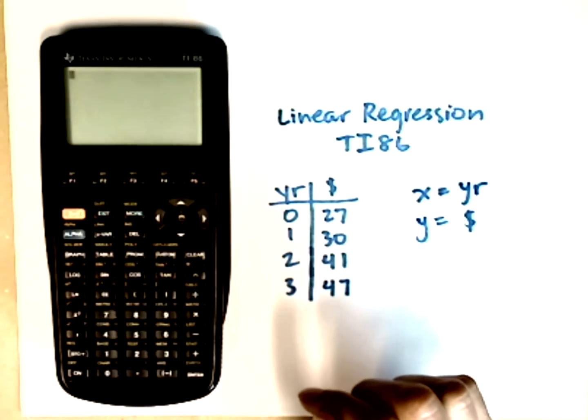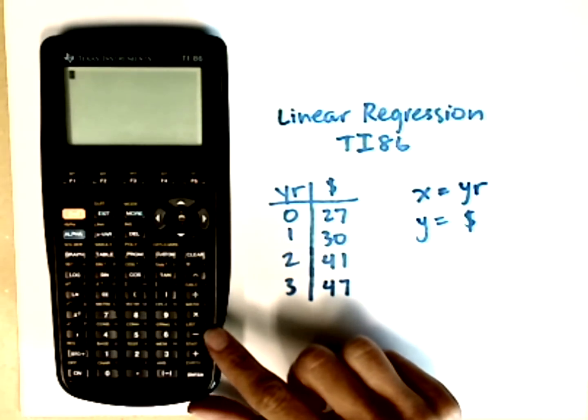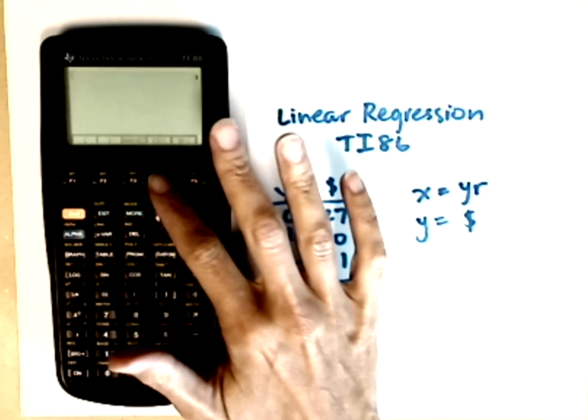To do this on the TI-86, we want to start by entering our data. We're going to go to the list menu, which is right here, so I'm going to go second followed by list. I want to edit my data, so I'm going to hit edit.